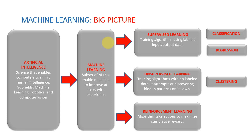Let's recap what we discussed in the previous lecture. Artificial intelligence is the science that enables computers to mimic human intelligence. AI represents the larger umbrella, and machine learning, deep learning, and all the other stuff lies underneath it. Machine learning is a subset of AI that enables machines to improve at a given task with experience.